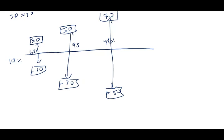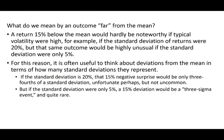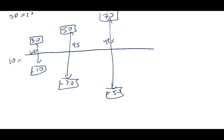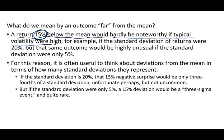Now let's think about what 'far from the mean' means. A return of 15% below the mean would hardly be noteworthy if typical volatility were high. In our example with SD=20%, a return 15% below the mean gives us 10 minus 15 = negative 5%, which is still within one standard deviation. So for a high-volatility portfolio like this, being 15% below the mean is not a big deal.